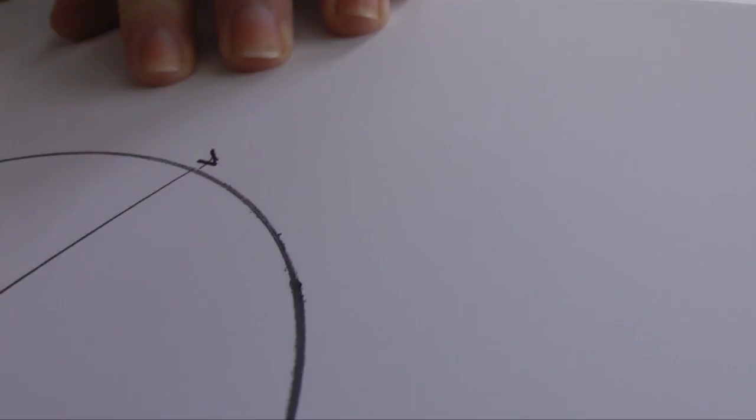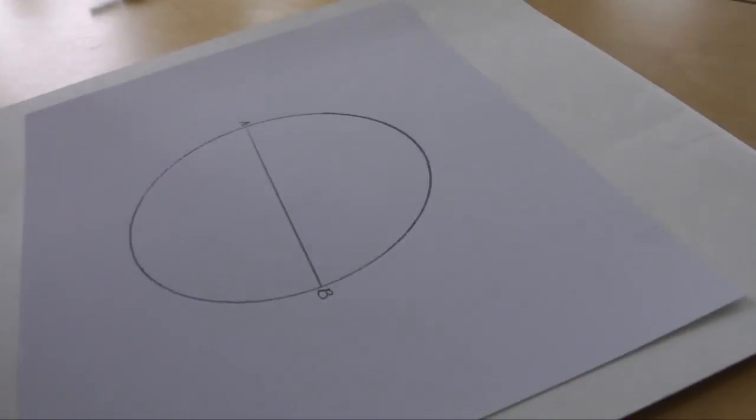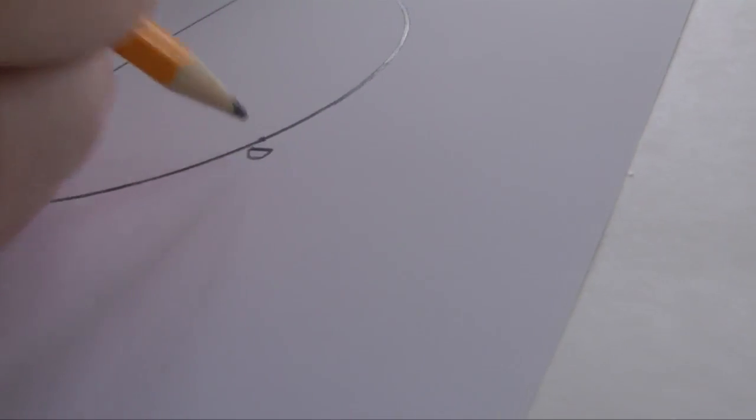A and B represent the ends of this line. Now mark a point anywhere on the circumference of the circle. Label this point D.